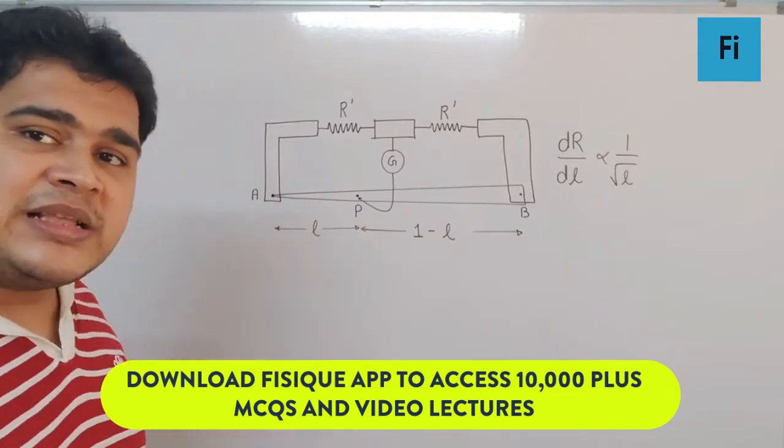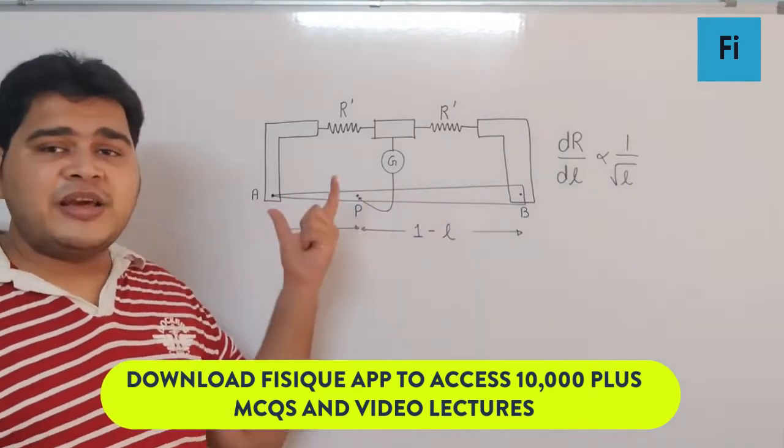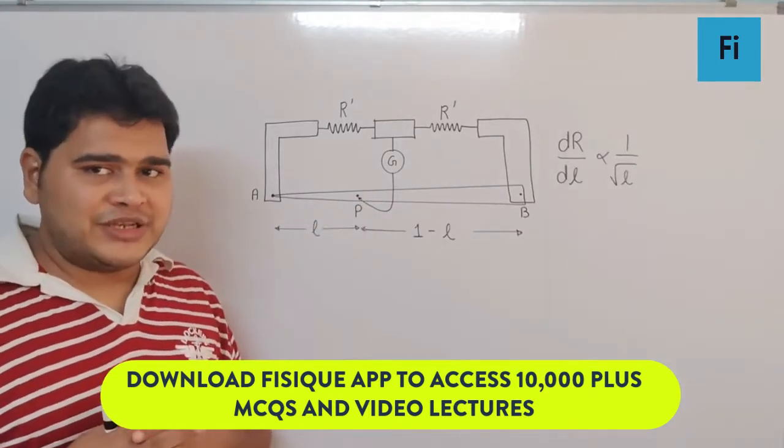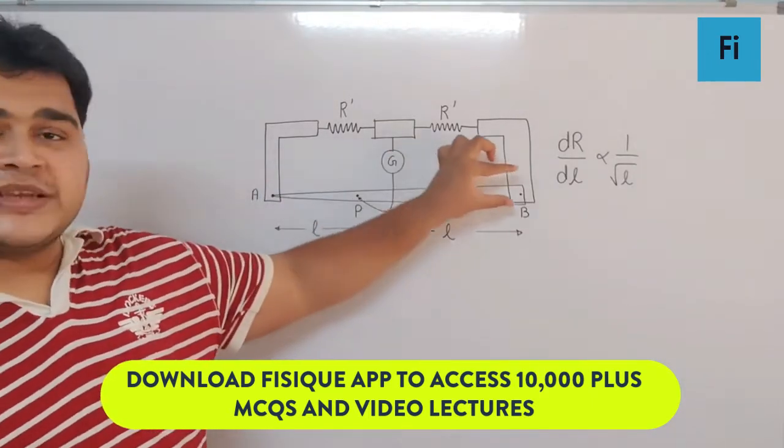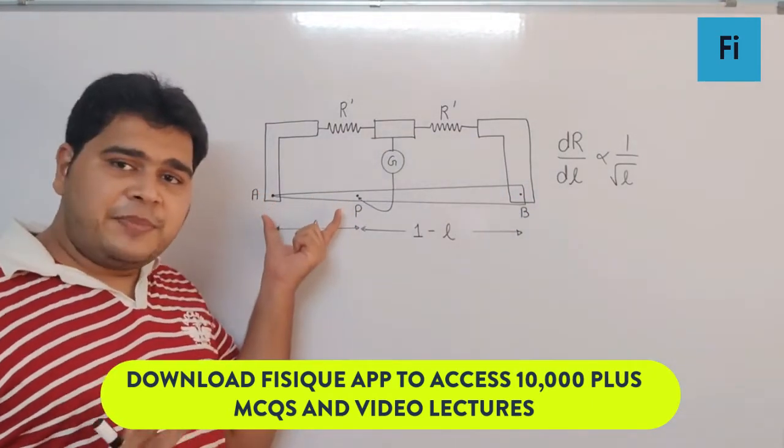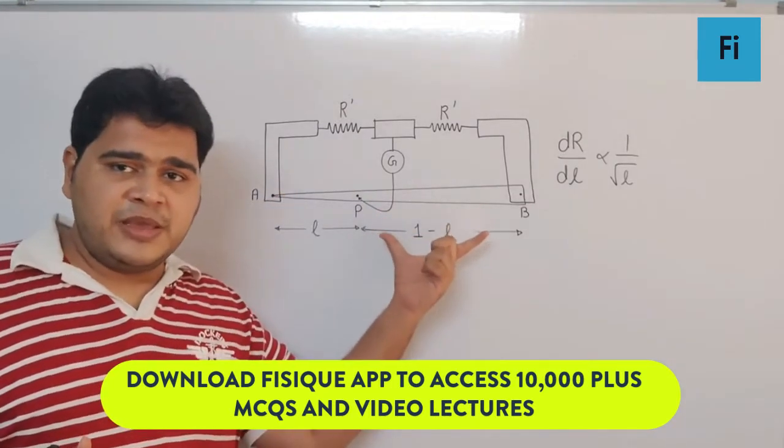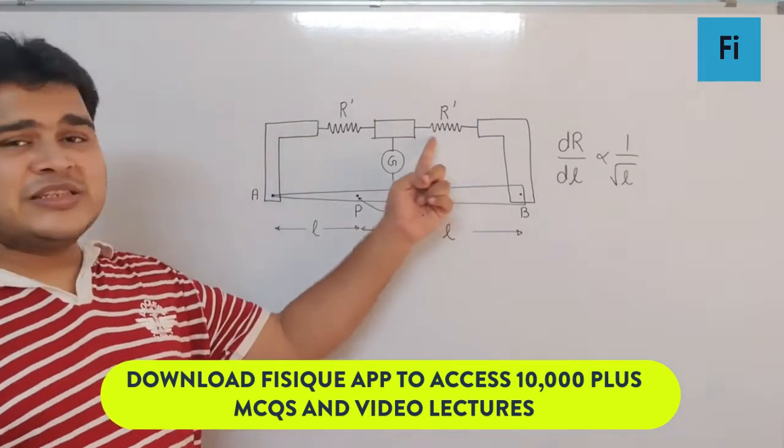First, since this wire has a non-uniform area of cross section—as you can see, the area of cross section is increasing—we can definitely say the resistance of part AP is not going to be exactly equal to the resistance of part PB because these two resistances are the same.